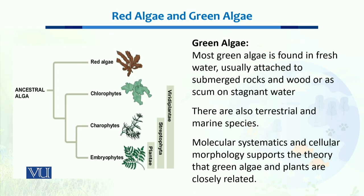Green algae is also present floating on stagnant water. In summer, when you find stagnant freshwater, you will see a green layer on the surface — that is because of green algae. Phylogenetic analysis shows that green algae closely resembles higher plants, and we can say that green algae is the ancestor of plant species.